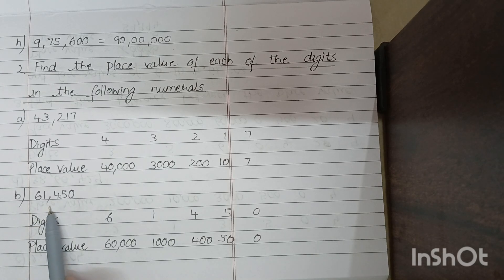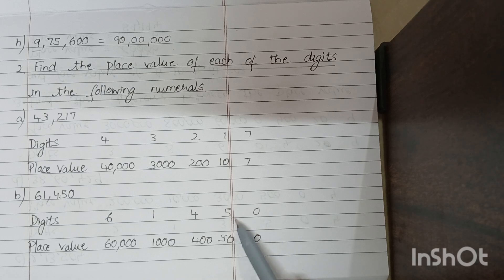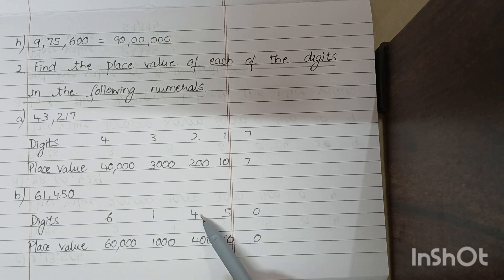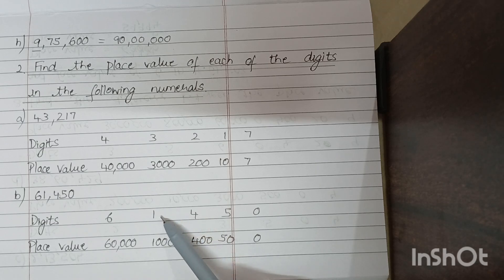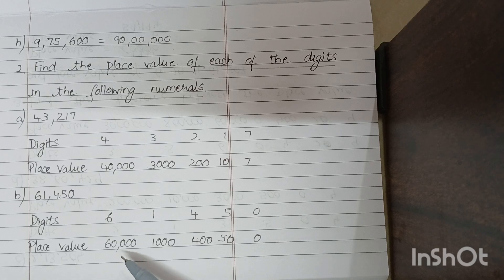B. 61,450. Digits and place values: 0 is in 1's place so 0; 5 is in 10's place so 50; 4 is in 100's place so 400; 1 is in 1,000's place so 1,000; 6 is in 10,000's place so 60,000.